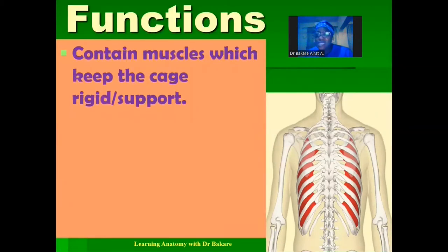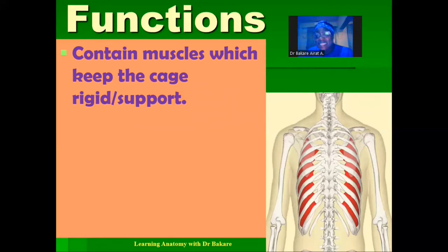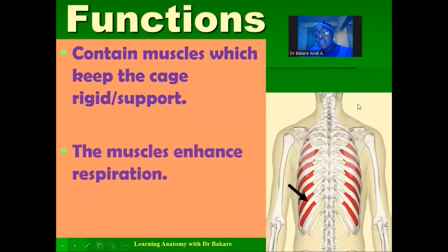Let's look at the functions of the intercostal spaces. These spaces are not left open — they are filled with muscles, specifically the intercostal muscles. This muscle helps to keep the rigidity of the thoracic cage, giving it structural stability. These intercostal muscles, highlighted in red, also enhance respiratory processes by helping either expand or reduce the capacity of the thoracic cavity, which is fundamental to respiration.